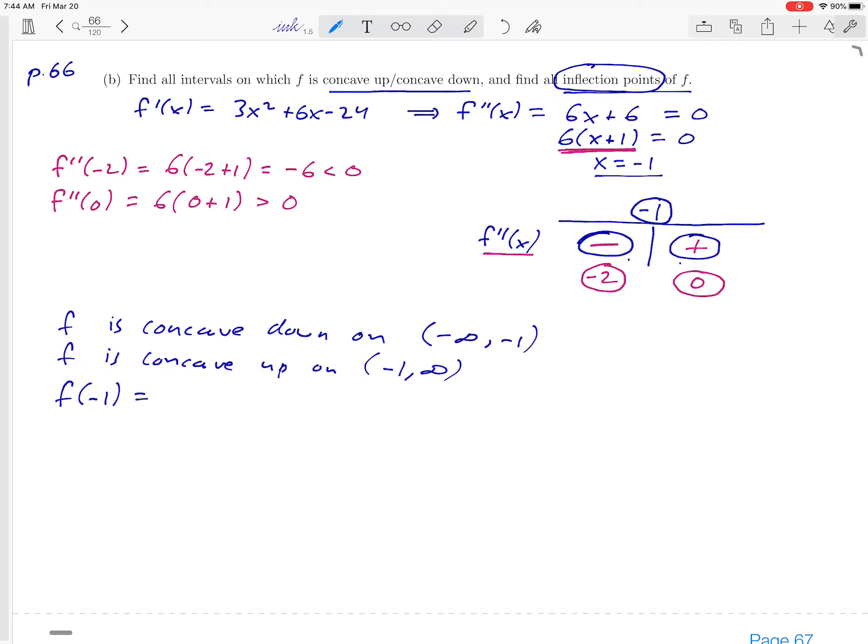So we've got one inflection point at -1. We'll leave some space to do that calculation. Again, f(-1)—we're interested in the value of f, the original function, at -1. So I'm going to take that -1 and plug it into the formula way at the top of the page.